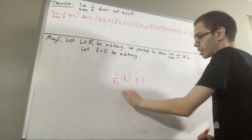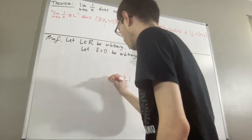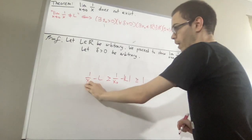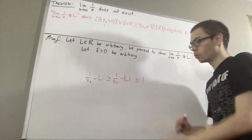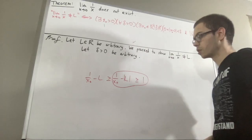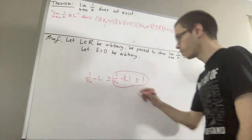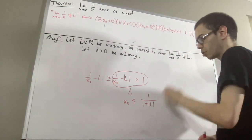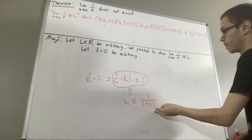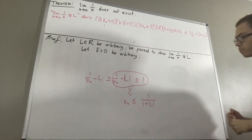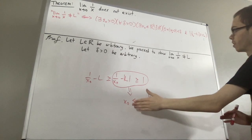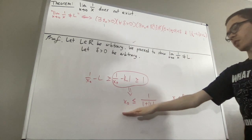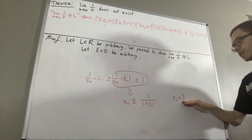Because if we find an x naught such that 1 over x naught minus absolute value of L is greater than or equal to 1, then we know that 1 over x naught minus L is greater than or equal to 1 over x naught minus absolute value of L, so it follows that 1 over x naught minus L will be greater than or equal to 1. Solving for x naught, we see that x naught needs to be less than or equal to 1 over 1 plus absolute value of L. But we also need to make sure that our choice of x naught is less than delta.